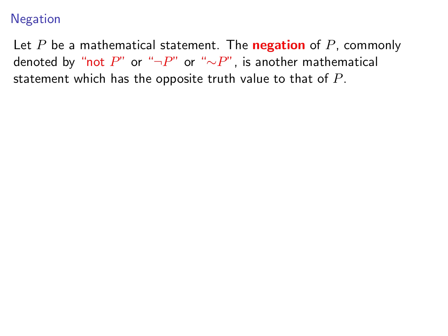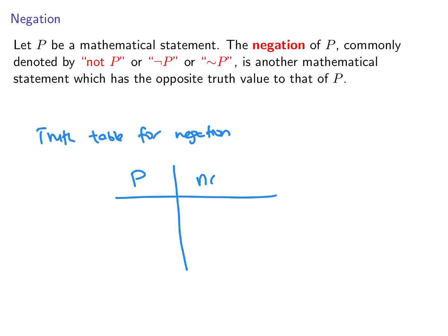A very important object in logic is the truth table. The idea for a truth table is basically summarizing all possibilities for the truth or falsity of a statement. The truth table for negation is fairly simple. You have a statement p and its negation, not p. There are two possibilities for p — p can be true or false. Since negation has the opposite truth value, when p is true, not p is false, and when p is false, not p is true.